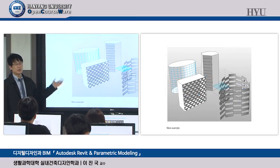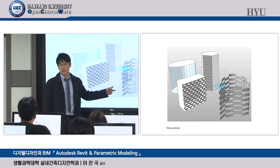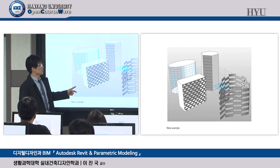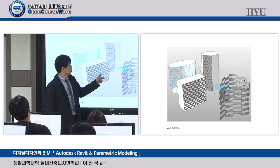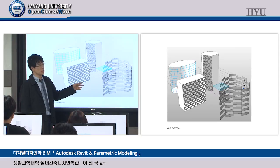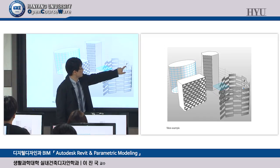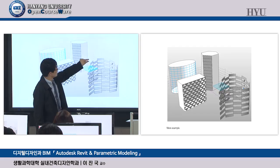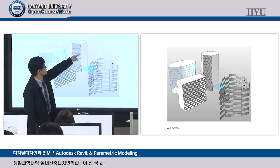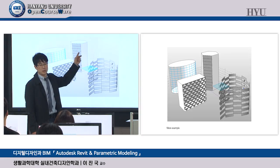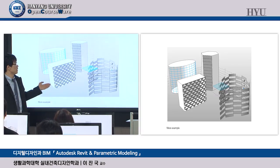In today's lab exercise, we're going to create this kind of shape. This is the Revit — or precisely, Vasari — interface, but the same as Revit. These are building masses at building scale. Take a look at the level notation: one level distance is probably four to five meters, meaning this shape has around 10 to 20 meters of height — very large-scale building masses.